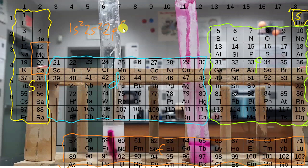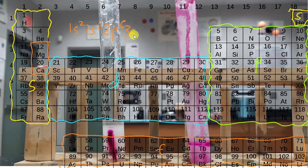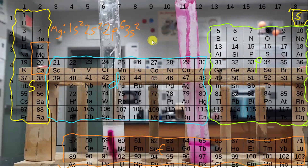Then you go back to the S block. The row number is 3 — that's also the principal energy level — 3S, and 1, 2. So that's the electron configuration for magnesium.